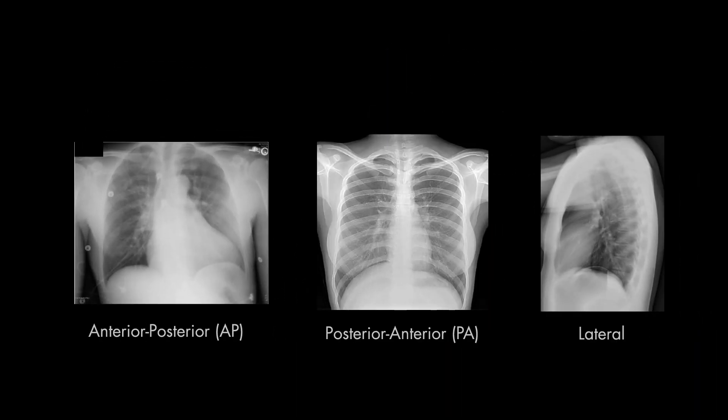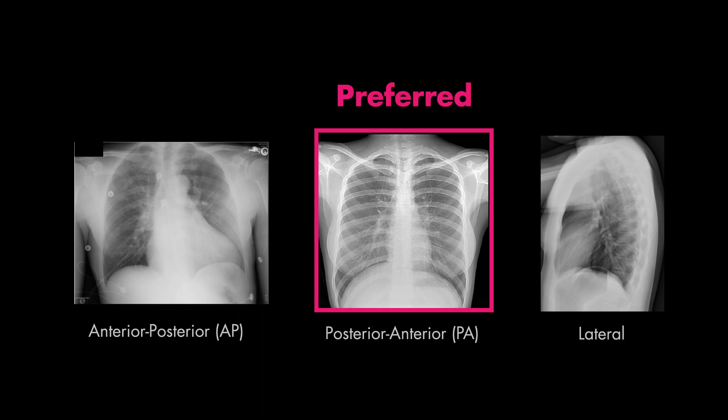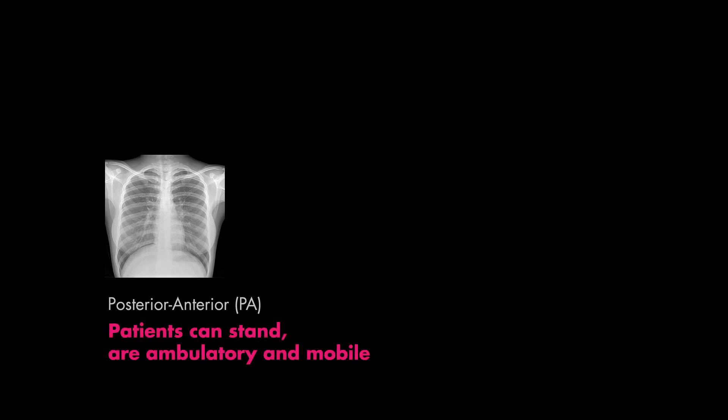Knowing this, and making a mental note of whether the chest x-ray was shot from behind or in front, is helpful when making assessments later on. In general, the posterior-anterior view is superior in quality to the anterior-posterior view. If you can safely obtain a posterior-anterior film on your patient, this would be preferred. That's because posterior-anterior x-rays are usually obtained on ambulatory patients who are able to position themselves, giving the x-ray technician more flexibility.